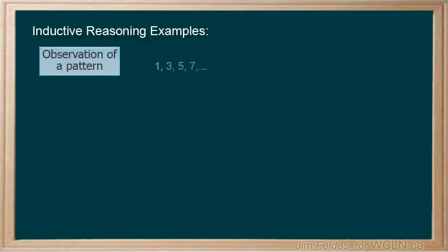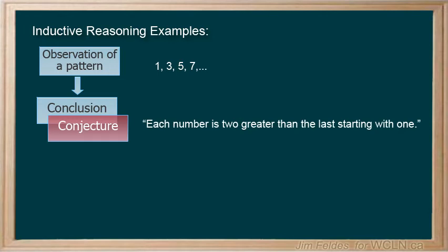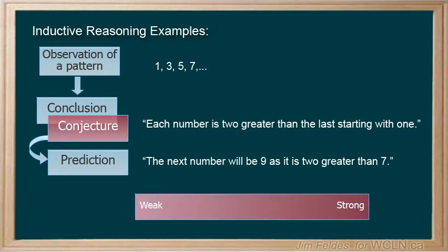Here is a simple sequence that forms a pattern. What conjecture can we make? Each new number is 2 greater than the last. Or we could suggest it is a list of odd numbers starting at 1. And our prediction would be, the next number will be 9, as it is 2 greater than 7. How strong is this conjecture? We could suggest it is relatively strong, as the pattern is pretty clear.